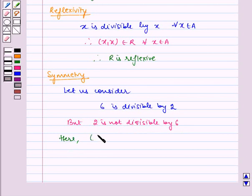Here (2,6) belongs to R, but (6,2) does not belong to R. Therefore R is not symmetric.